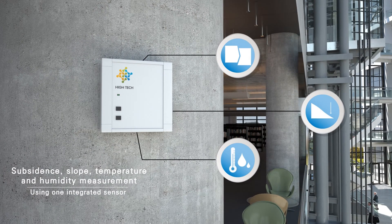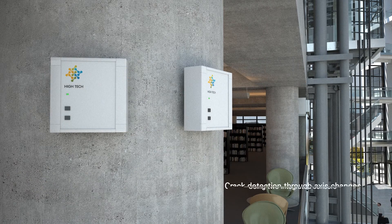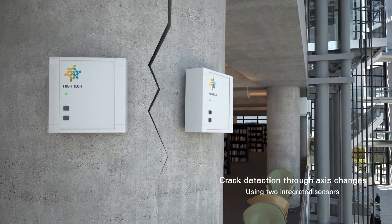When using two integrated sensors, install each sensor on the left and the right of a crack to sense cracking through the axis change.